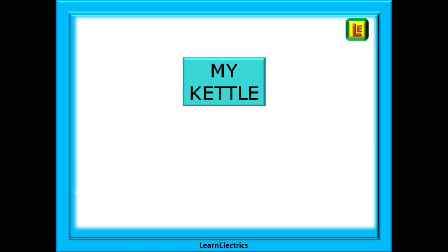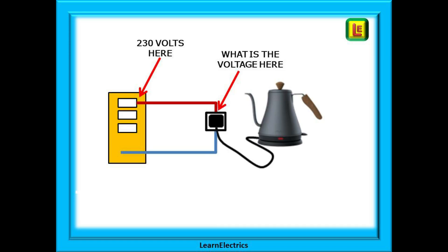Now we can apply these same methods to the kettle. The key question is: if the voltage is 230 volts at the consumer unit, what is it at the socket when the kettle is plugged in? The voltage at the consumer unit will vary from property to property and hour to hour, but we will use the nominal voltage of 230 volts as suggested in the wiring regulations for all calculations, even though many actual measured voltages are nearer to 240 volts.